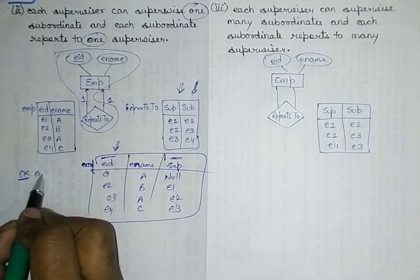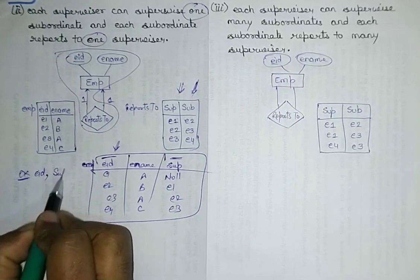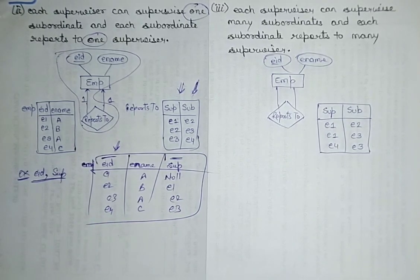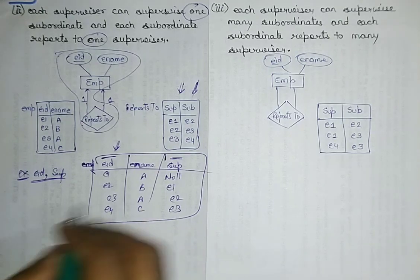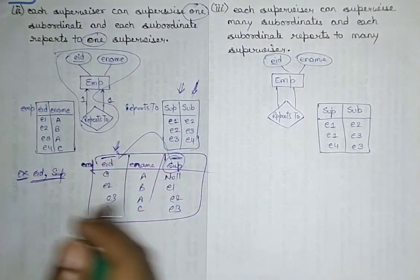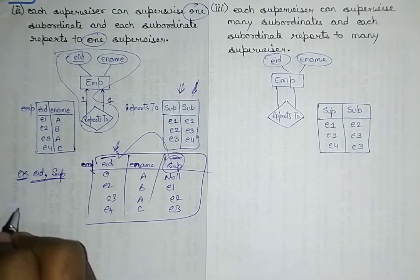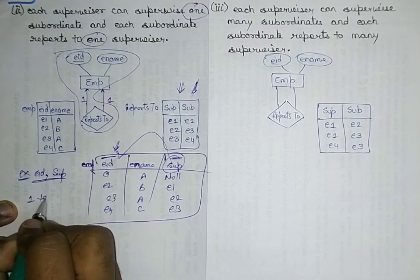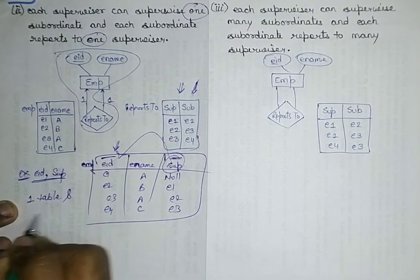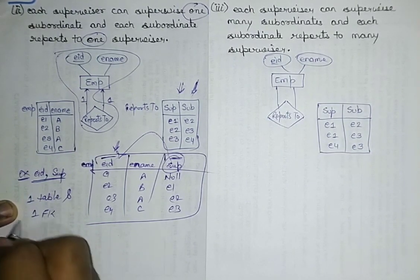There are two candidate keys: employee ID and supervisor. Minimum one table is required and one foreign key — supervisor — which references the employee column of the same table. A foreign key can reference the same table. So minimum one table and one foreign key are required for a one-to-one unary relationship.